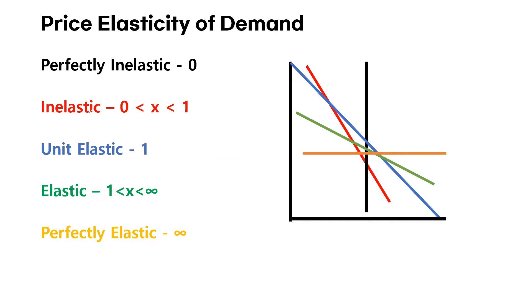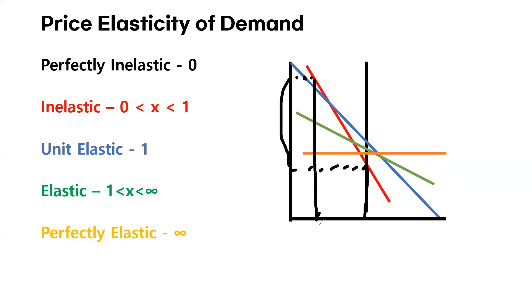The second type of price elasticity of demand is inelastic, and we say it is inelastic if the calculated elasticity is bigger than zero but smaller than one. Let's take a look at this red line. The price changed a lot between those two points, but did the quantity really change as much as the change in price? The answer is no.